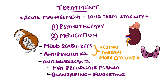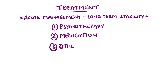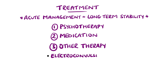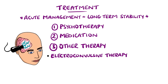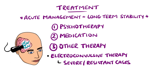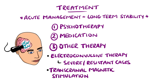Olanzapine and fluoxetine is a combination therapy approved for treating bipolar depression. Other treatments include electroconvulsive therapy, where convulsions are induced by electric currents, used only in resistant or extremely severe cases. Similarly, transcranial magnetic stimulation uses magnetic waves instead, is less powerful than ECT, and can be done without general anaesthesia.